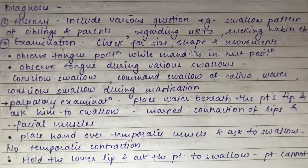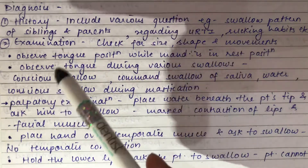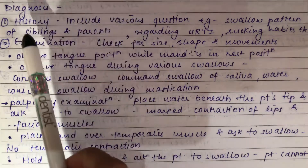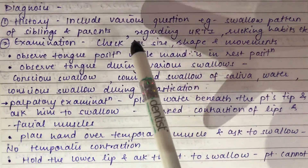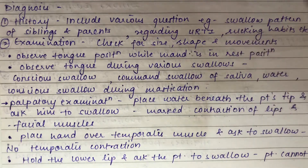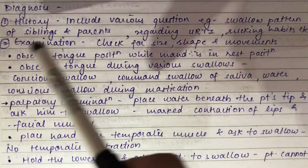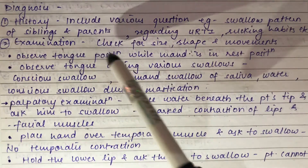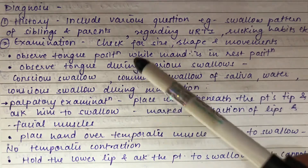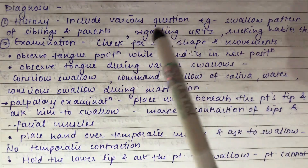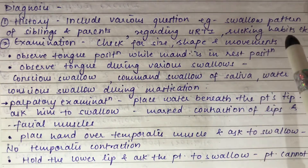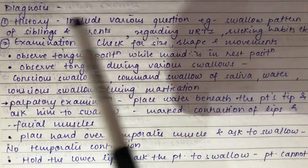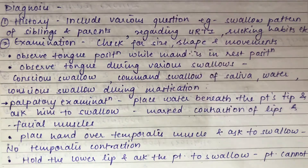For diagnosis, history taking includes questions about the swallow pattern of siblings and parents to assess genetic factors, and inquiries regarding upper respiratory tract infection, sucking habits, and other etiological factors.